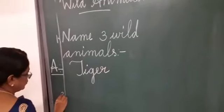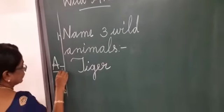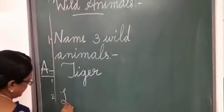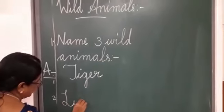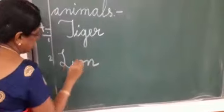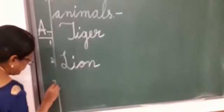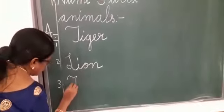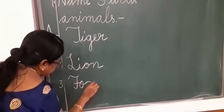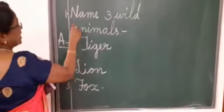Number two: Lion — L-I-O-N. Lion is the king of the forest. Number three: Fox — F-O-X. So learn these three names.